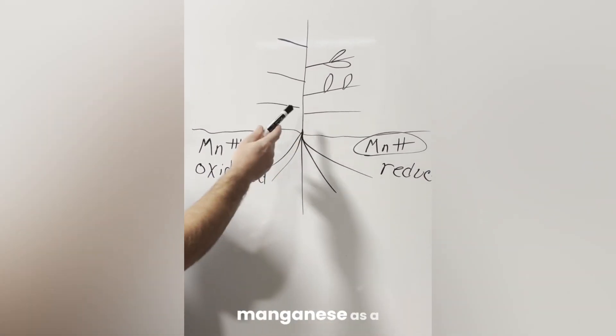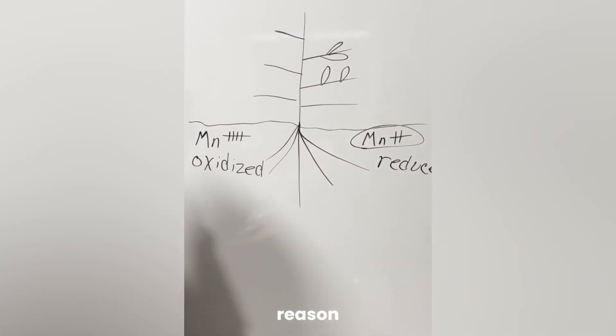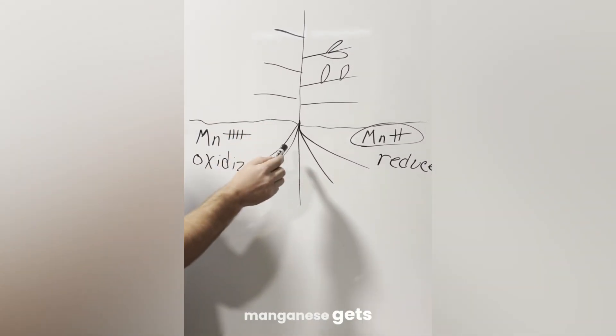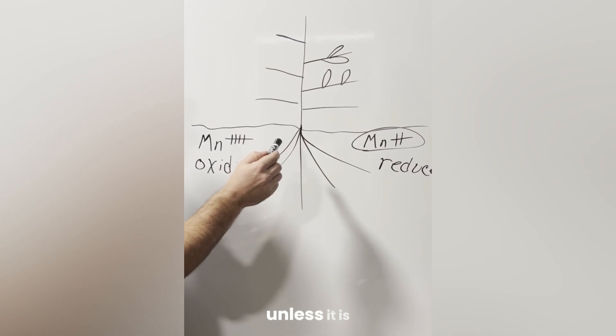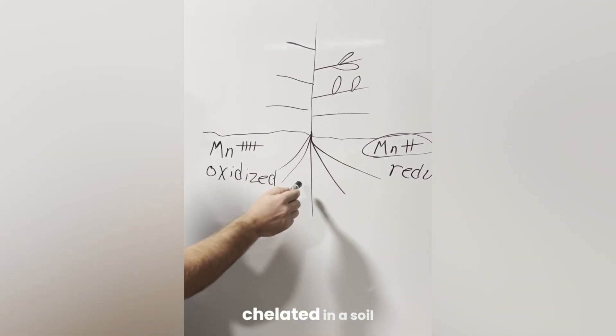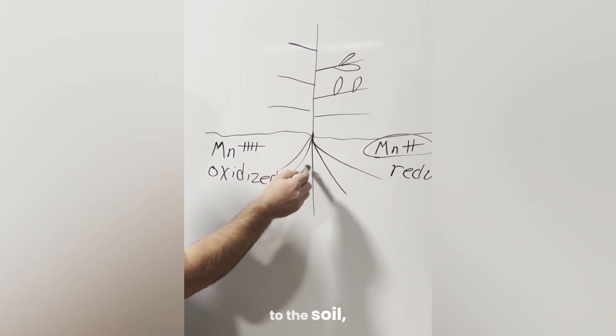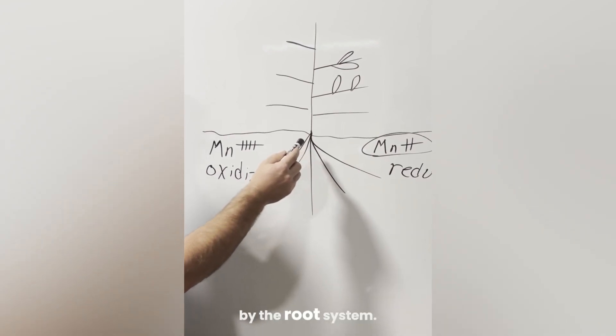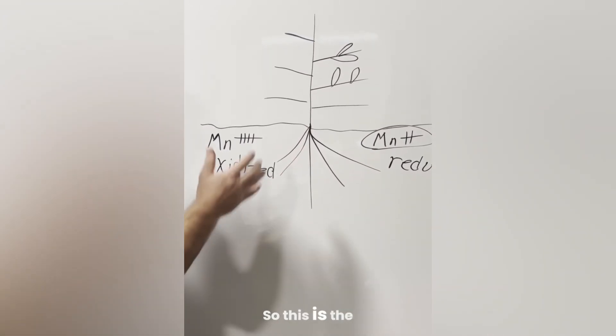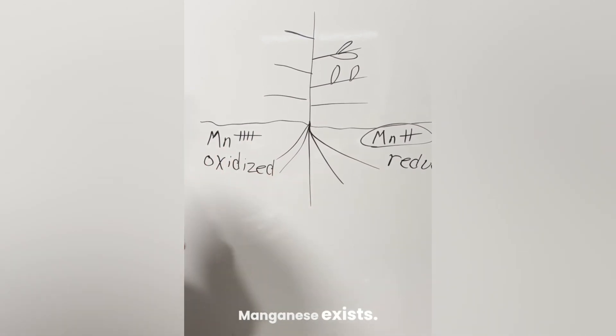we have to address manganese as a foliar for the simple reason that whatever manganese gets added to the soil, unless it is chelated in a soil microbial friendly form as rebound manganese is, when you add manganese to the soil it doesn't get absorbed by the root system.